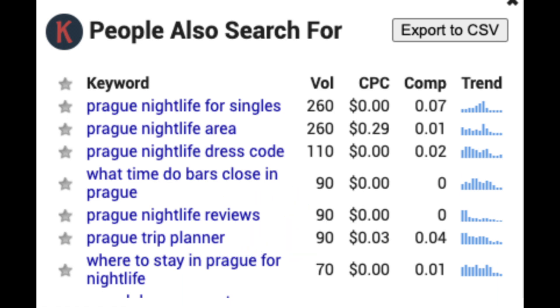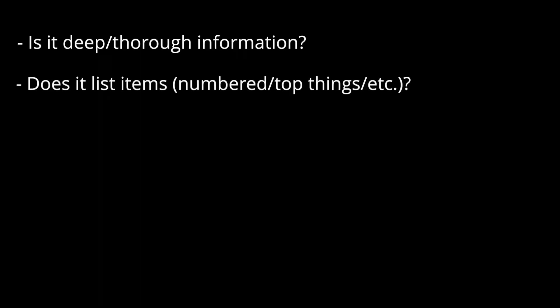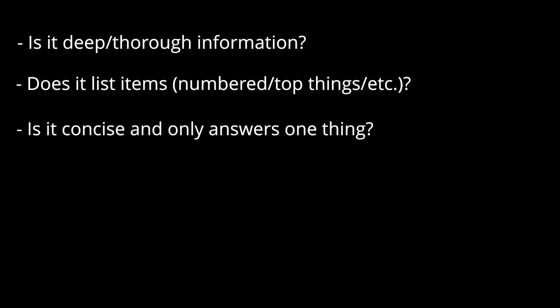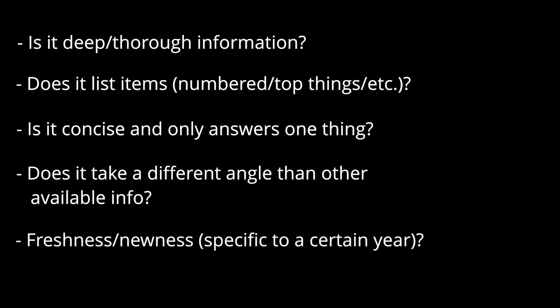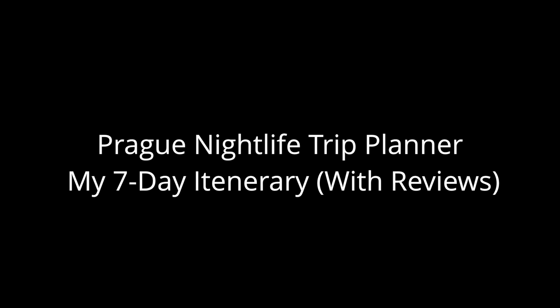To pick a title, you must be descriptive. You can ask yourself: is it deep, thorough information? Does it list items? Is it concise and only answers one thing? Does it take a different angle than other available information? And is there freshness and newness? To hit all three keywords I'm trying to rank for, I have chosen the title 'Prague Nightlife Trip Planner: My Seven-Day Itinerary with Reviews.'